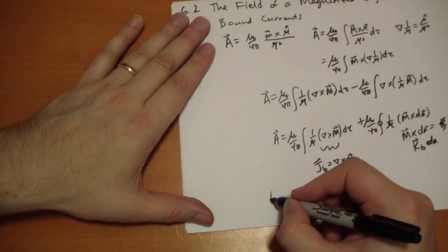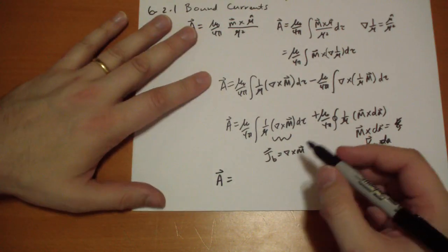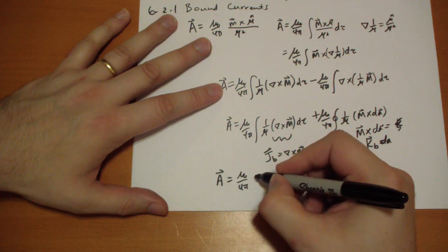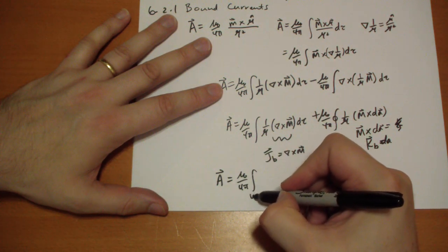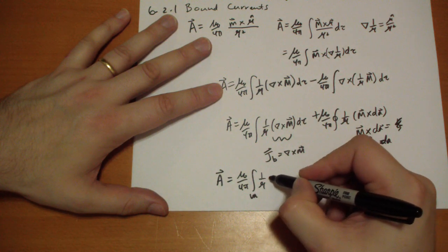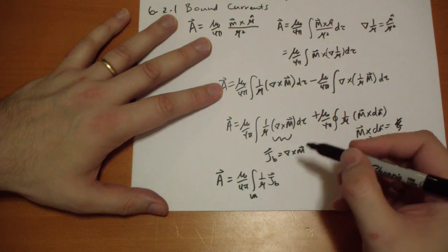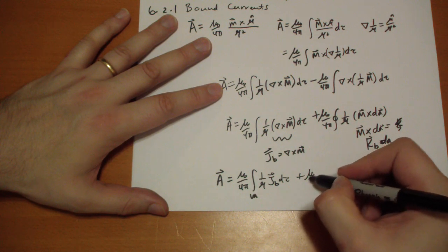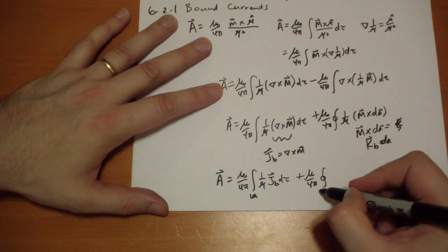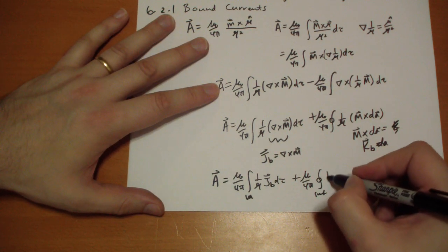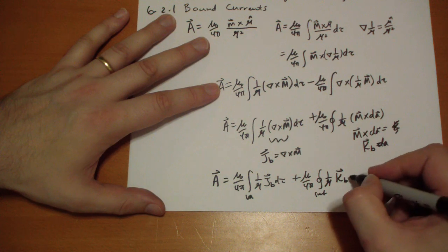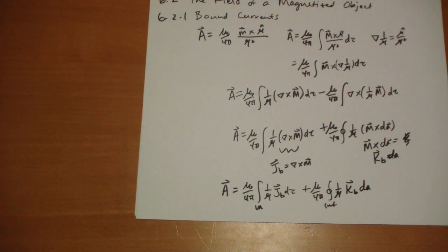Okay, so we can rewrite this equation as the potential, due to the magnetization of the matter, is equal to mu-naught over four pi, the volume integral of one over r times the bound current, okay, plus mu-naught over four pi, the surface integral of one over r times the bound current, bound surface current, d-a. Okay.